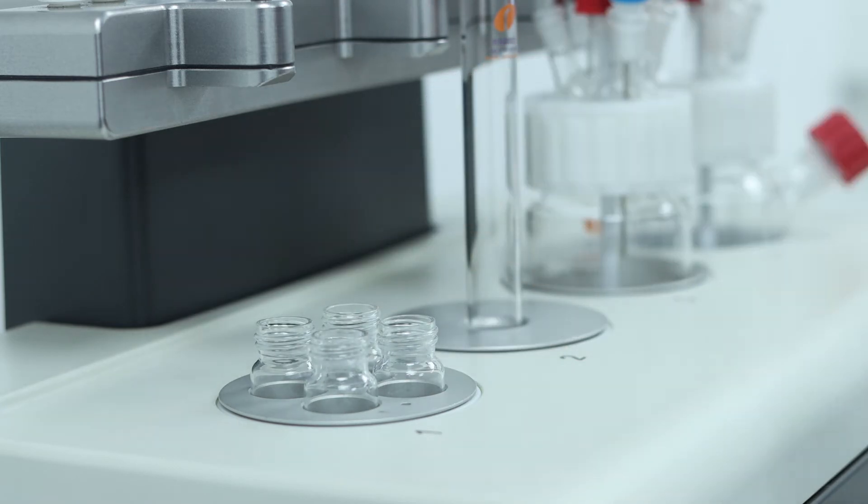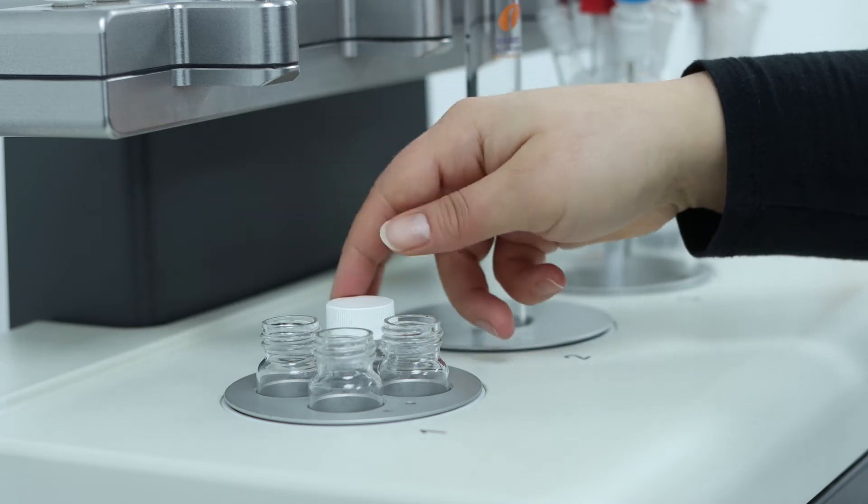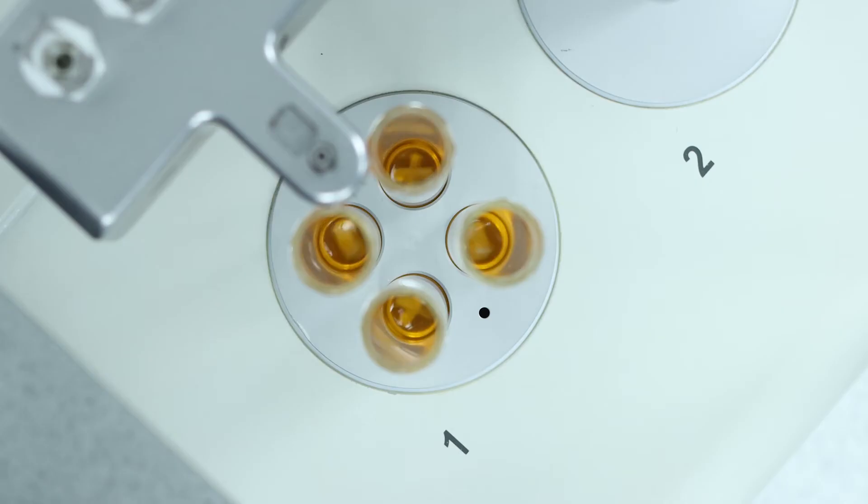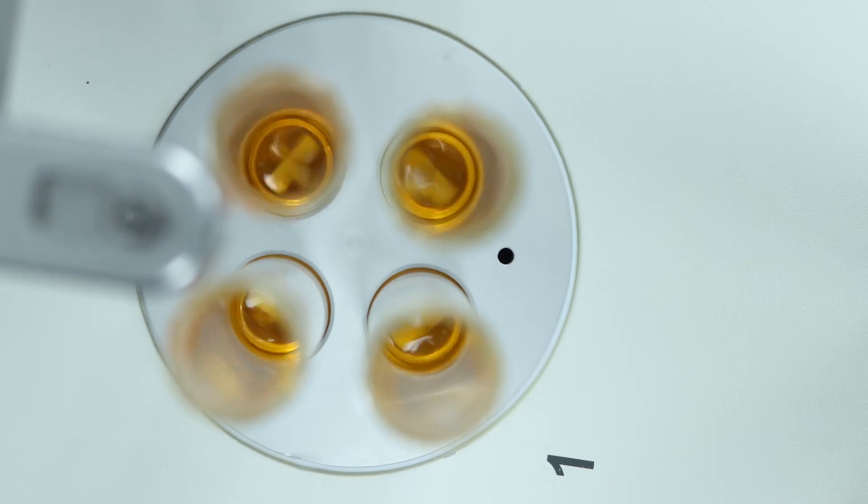Add the recommended stirrer bars and caps if using. All the tubes or vials are now positioned in a circle at the same distance from the magnet in the center, which means the stirring will be the same in all positions.